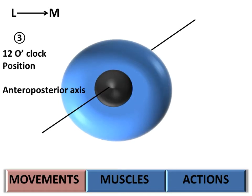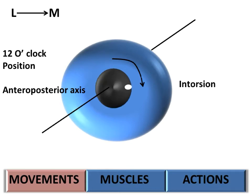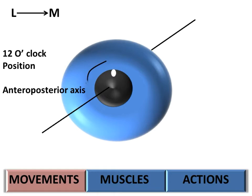Along the anteroposterior axis, the 12 o'clock position of the cornea can move towards the medial wall, called intorsion, or it can move towards the lateral wall, called extorsion.